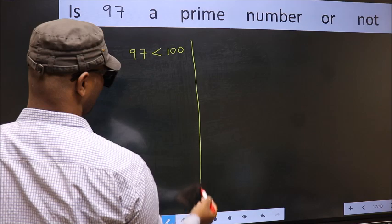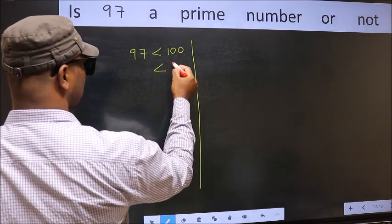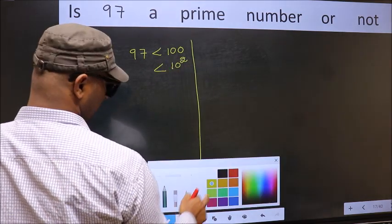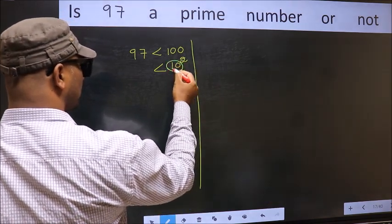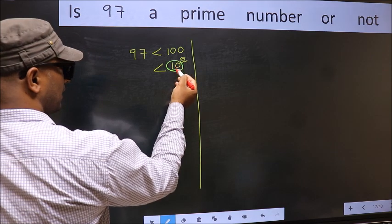Next, 100 is nothing but 10 square. Now, write all the prime numbers less than this number 10.